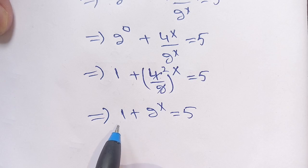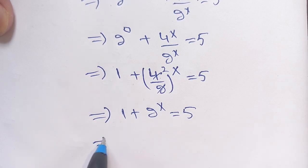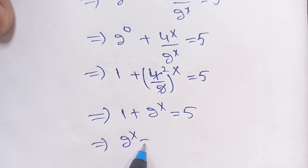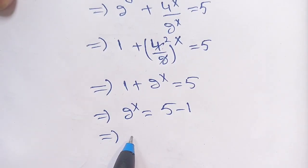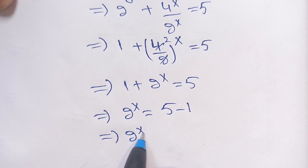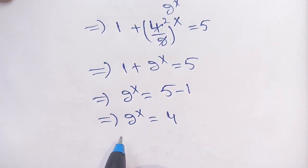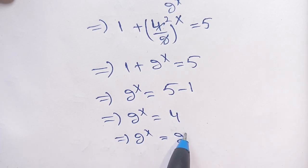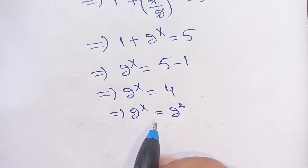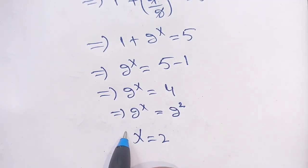On subtracting 1 from both sides, we get 2^x is equal to 5 minus 1, which is 4. Since 4 can be written as 2^2, we have 2^x is equal to 2^2. On comparing base to base and power to power, we get x is equal to 2.